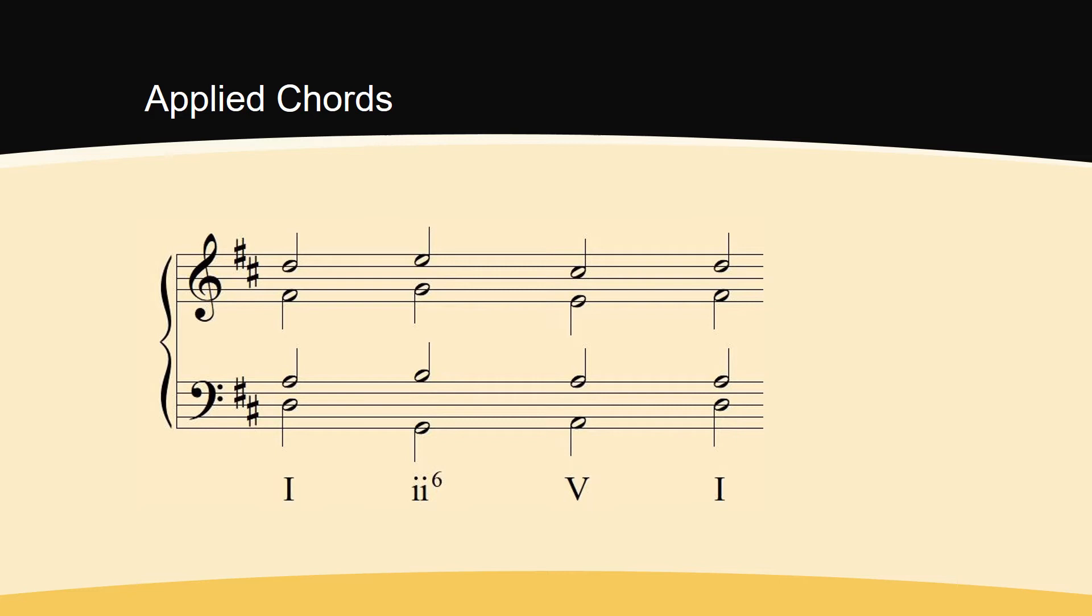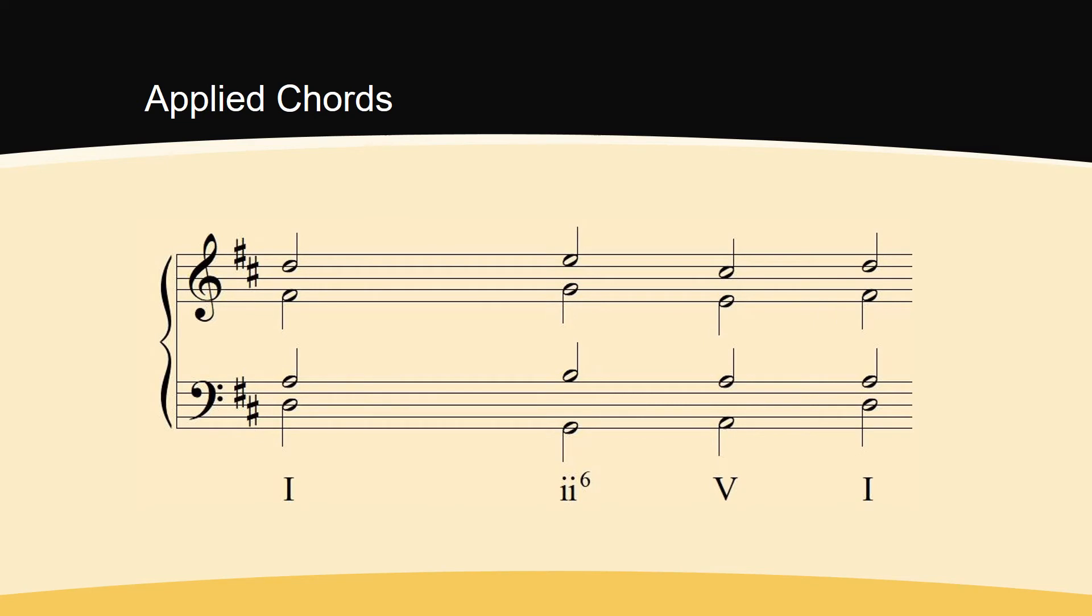Here is a simple chord progression in D major. Let's insert an applied chord before the minor ii6 chord. Here is what the progression sounds like now. Ooh! Let's look at how this new chord is spelled. Its root is B. Its quality is major. It contains the chromatic pitch D sharp, which is not part of the written key signature of D major.